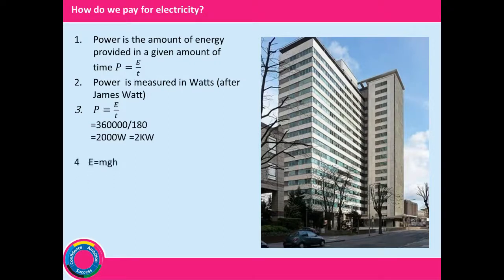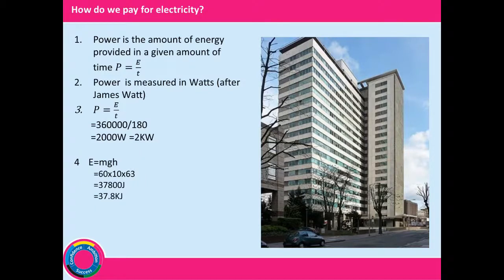Question number four: a man runs to the top of a 63-metre tall building. How much energy does that require? That building is Southern House — one of the first places I worked. Using the equation E = mgh for gravitational potential energy: a 60 kg man, gravitational field strength of 10 N/kg, and 63 metres gives 37,800 joules, or 37.8 kilojoules of energy.